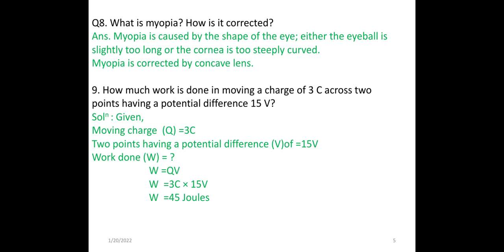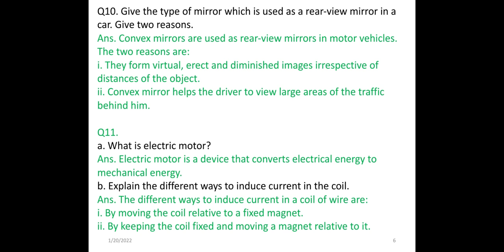Question 10: Give the type of mirror used as a rear-view mirror in vehicles and give two reasons. Convex mirrors are used as rear-view mirrors in motor vehicles. Reason 1: Convex mirrors form a virtual, erect, and diminished image irrespective of the distance of the object. Reason 2: Convex mirrors help the driver to view a large area of the traffic behind him.